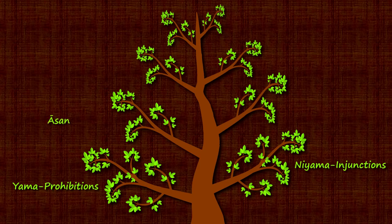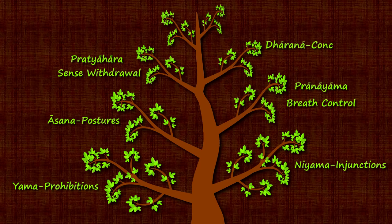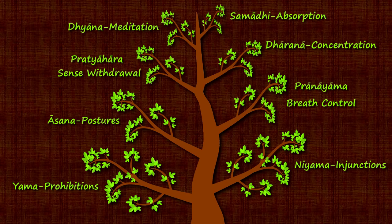The next three angas — asana, pranayama, and pratyahara — mandate certain kinds of control over your body, your breath, and your senses, respectively. The last three angas — dharana (concentration), dhyana (meditation), and samadhi (absorption) — mandate specific practices to control your mind. So these eight angas help you cultivate the skills required for meditation by teaching you how to control your body, breath, senses, and your mind.